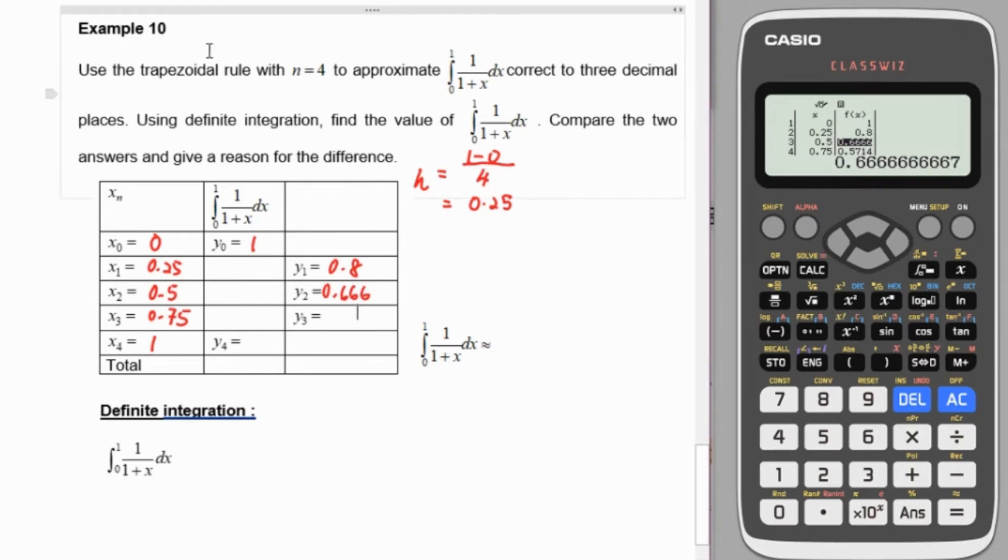For this trapezoidal rule we will correct it to 3 decimals, therefore in calculation I will use 2 more decimals, it will become 5 decimals. y4 equals 0.5. Sum up y0 and y4 which is 1.5. Total up y1, y2, y3 which equals 2.03810.